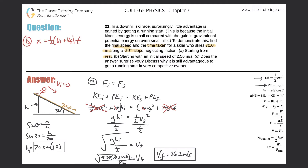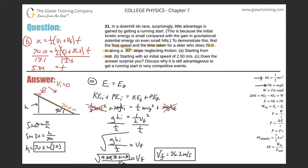The displacement the skier traveled is 70 meters, so: 70 equals one-half times the initial velocity of zero plus the final velocity of 26.2, multiplied by t. Simplifying: 0.5 times 26.2 gives 13.1, so we divide both sides by 13.1. The time works out to be 70 divided by 13.1, which is 5.34 seconds. This is still Part A — just the second part of it.